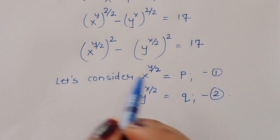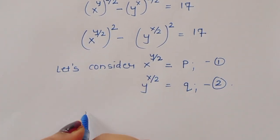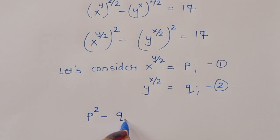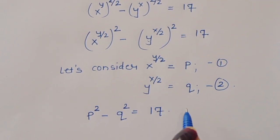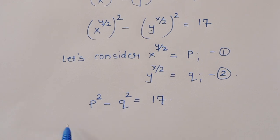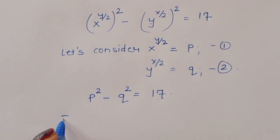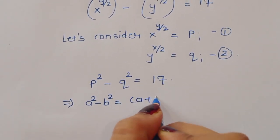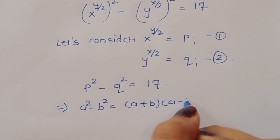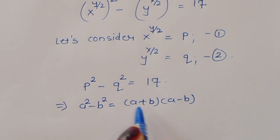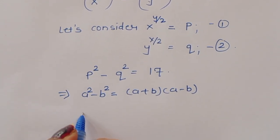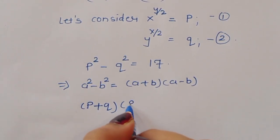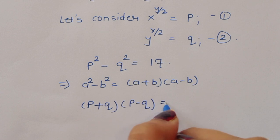Since x power y by 2 is p, we have p squared minus q squared is equal to 17. Now using the formula a squared minus b squared equals a plus b times a minus b, we can write p plus q times p minus q is equal to 17.